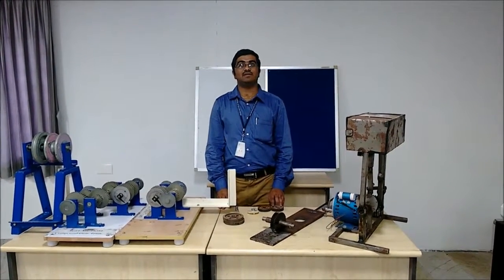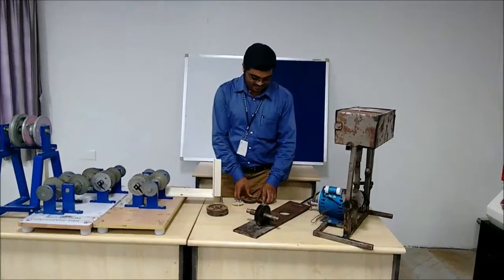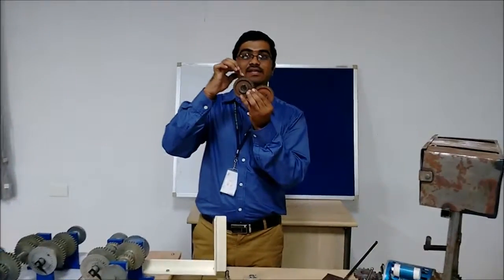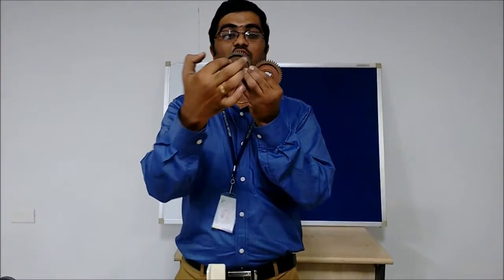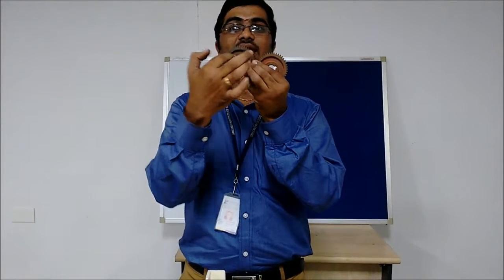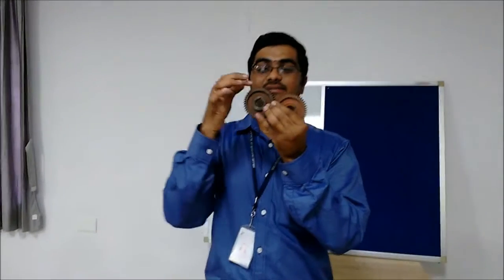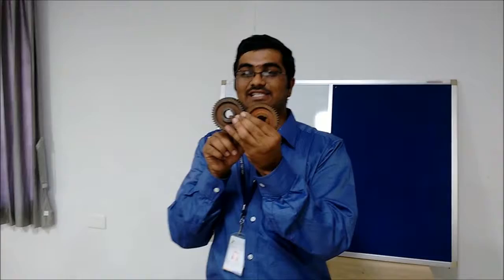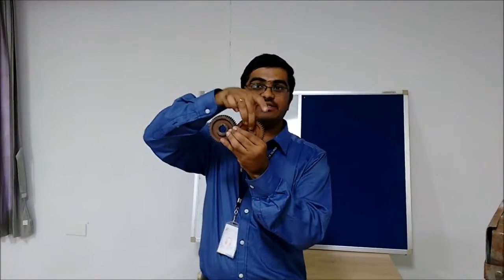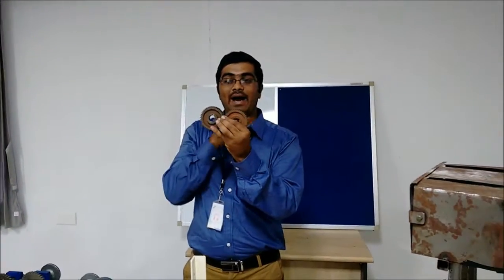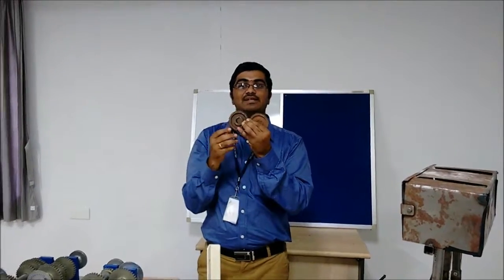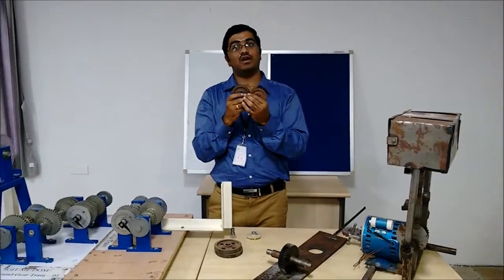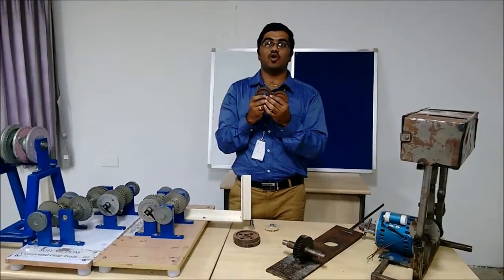First we can see about spur gear. This is the spur gear. Here teeth is parallel to the axis of rotation. This transmits the power from one shaft to another shaft in the parallel shaft. The spur gears are used in wind-up alarm clocks, washing machines, and cloth dryers.